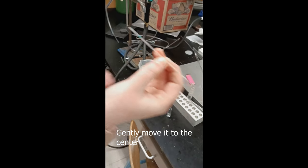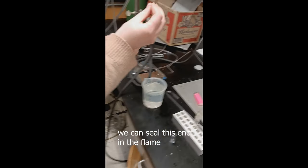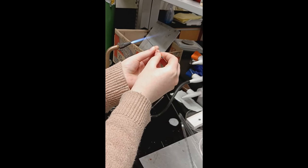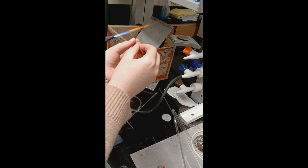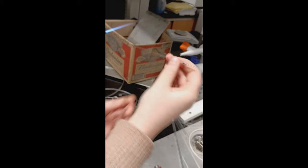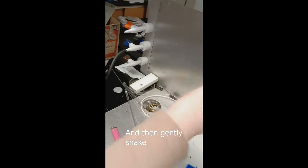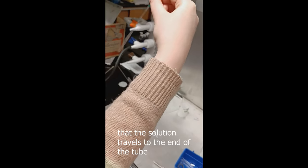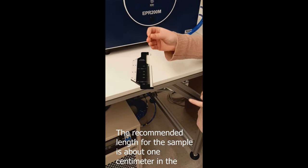Gently move it to the center. And once it's there, we can seal this end in the flame. And then gently shake so that the solution travels to the end of the tube. The recommended length for the sample is about one centimeter in the capillary.